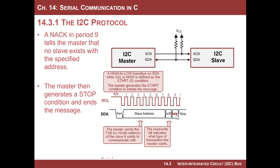Now let's go back to the beginning and consider a NACK scenario. The master initiates a start by pulling SDA down and then SCL down and starts pulsing. Periods 1 through 7 are the slave address, period 8 is the read/write. If nobody on the bus has the slave address, no slave pulls the line down, so the pull-up resistor leaves it high. The master sees a NACK, knows nobody is out there with that slave address, immediately generates the stop, and puts the bus back into an idle state.